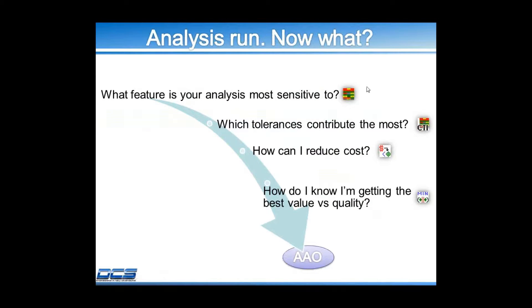AAO includes four methods: the advanced analyzer matrix, our critical tolerance identifier, our cost optimizer, and our quality optimizer.